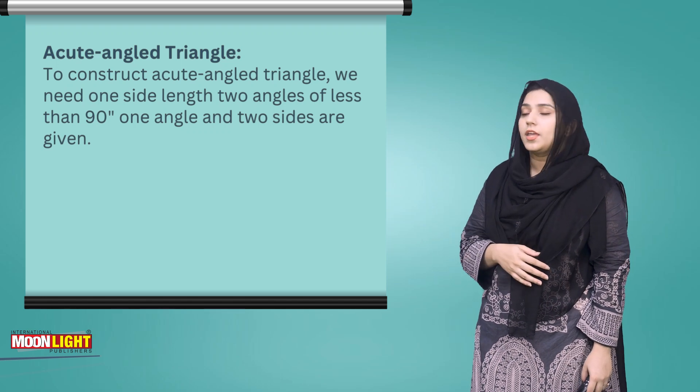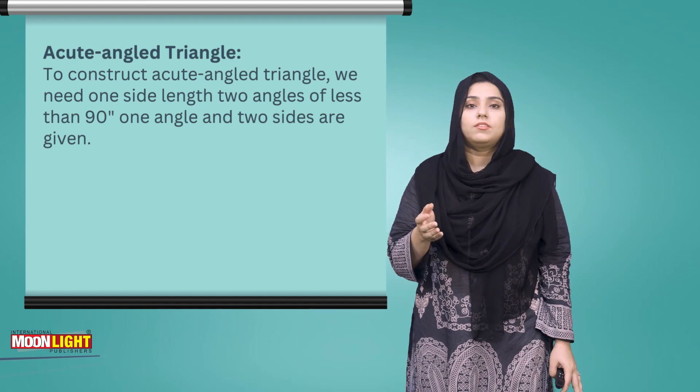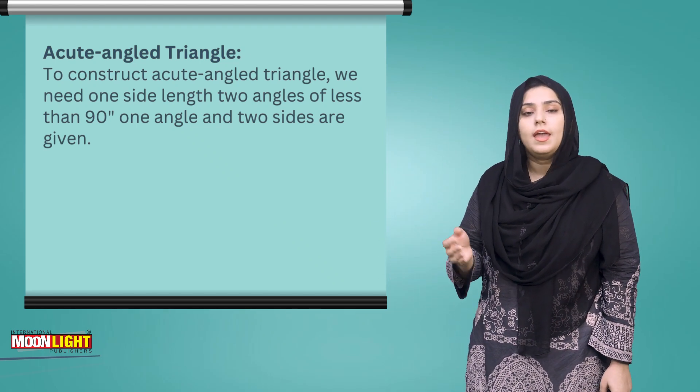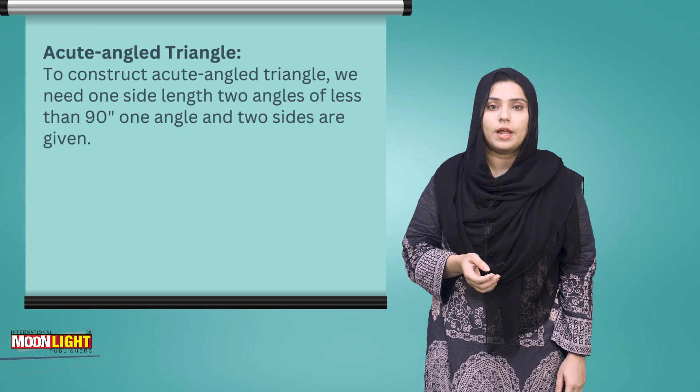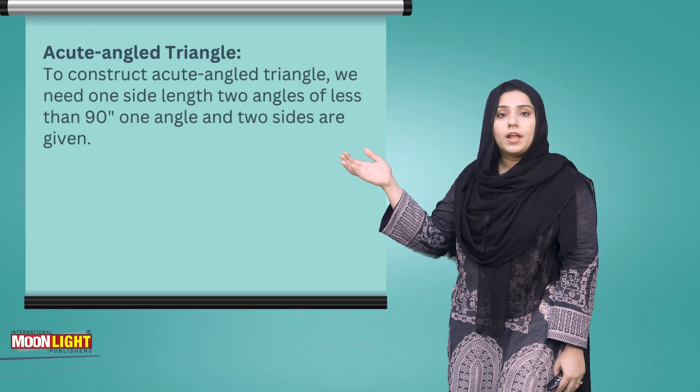Before we talk about Acute Angle Triangle, an acute angle triangle has all angles less than 90 degrees. So, we have to draw an Acute Angle Triangle.